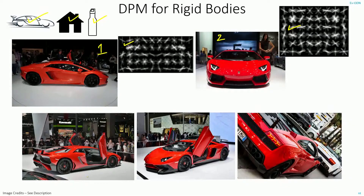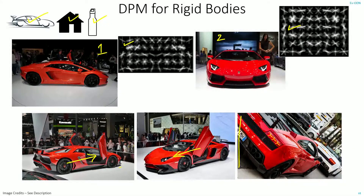But now, what happens if your object is aligned in a totally different angle than what you expected? That is, these two cases. And what happens if the object is partially occluded — that is, there is an occlusion or the object is not fully visible? In such cases, the main filter may not be able to identify your object perfectly, or even if it does, the confidence score might be less.